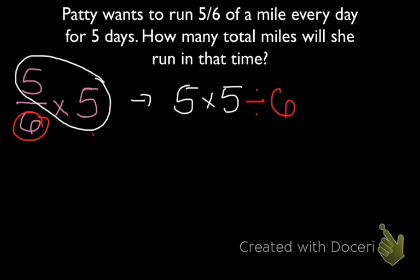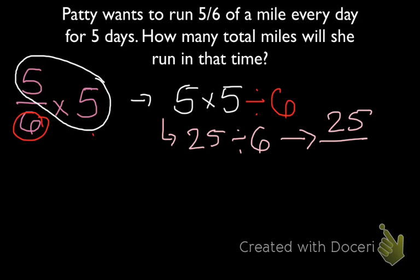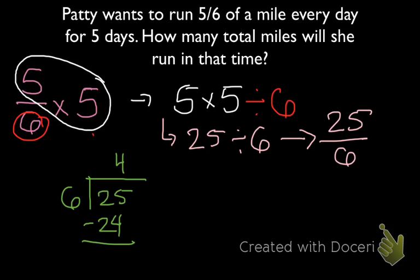5 times 5 is going to equal 25 divided by 6, which is represented by the fraction 25 sixths. Since this is an improper fraction, let's use long division to solve. 6 goes into 25, 4 times, because 6 times 4 is going to be 24. 25 minus 24 is going to give me just 1, so I have a remainder of 1. My mixed number is going to be 4 and 1 sixths. So in 5 days Patty is going to run 4 and 1 sixths miles.